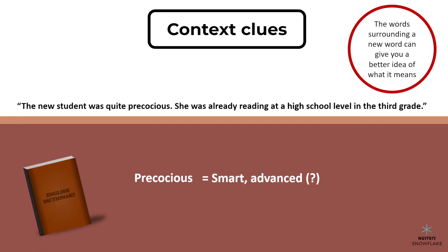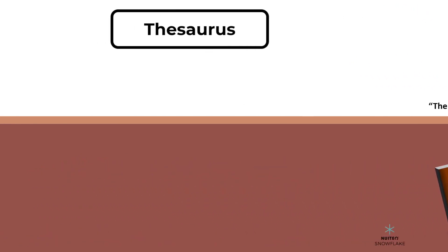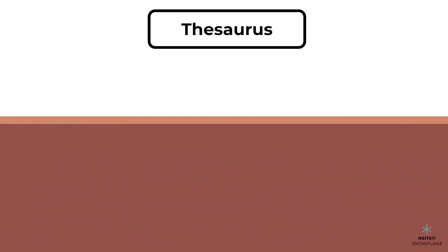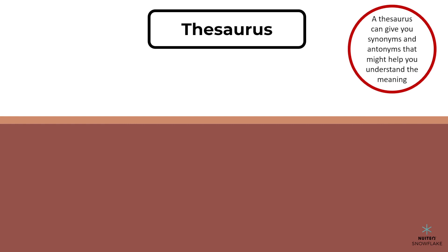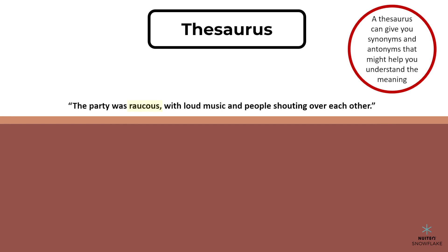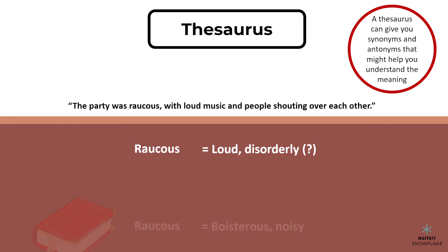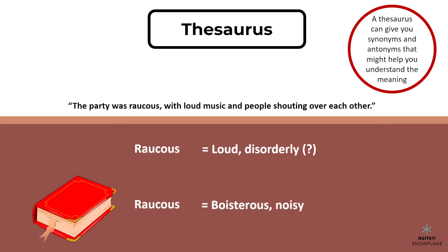But to be sure, you can look up the definition in a dictionary to confirm it. Another way to verify the meaning of a word or phrase is to check it in a thesaurus, which can give you synonyms and antonyms that might help you understand the meaning better. For example: 'The party was raucous, with loud music and people shouting over each other.' You might infer that raucous means loud or disorderly. You can look it up in a thesaurus and find that raucous is a synonym of boisterous and noisy.